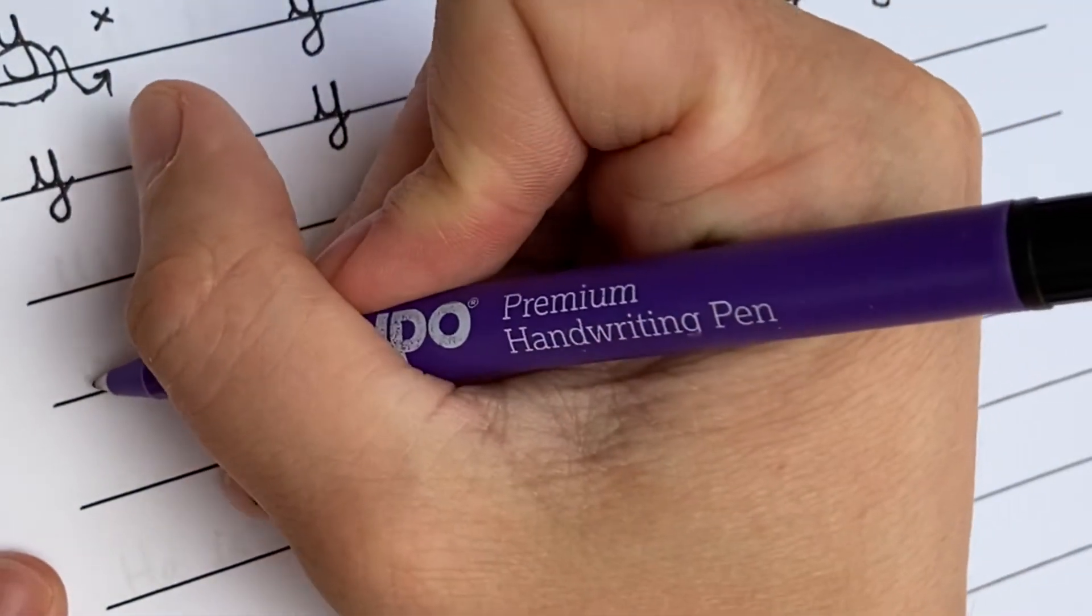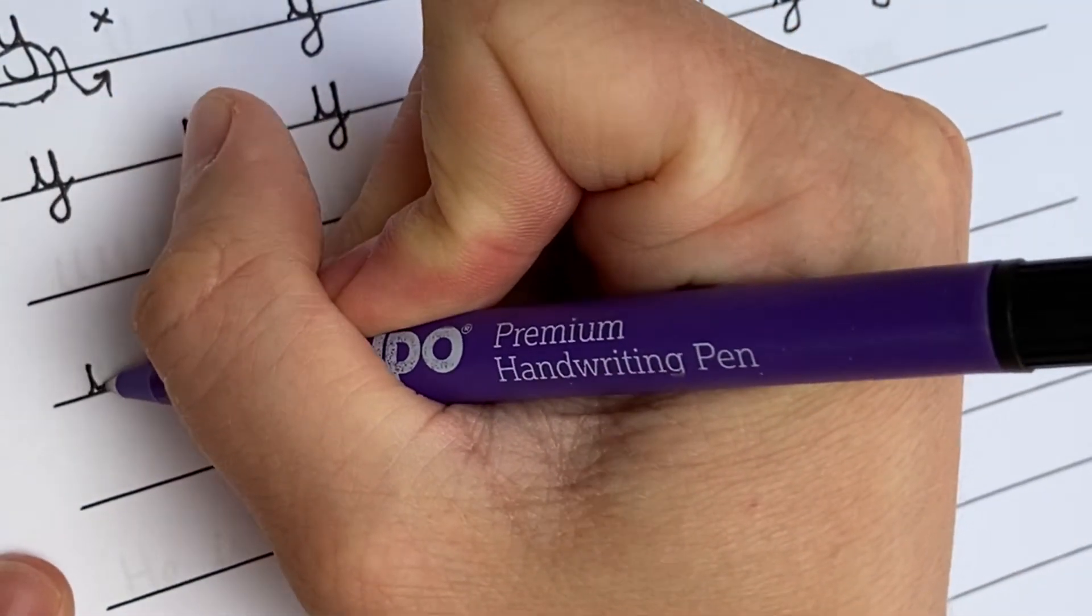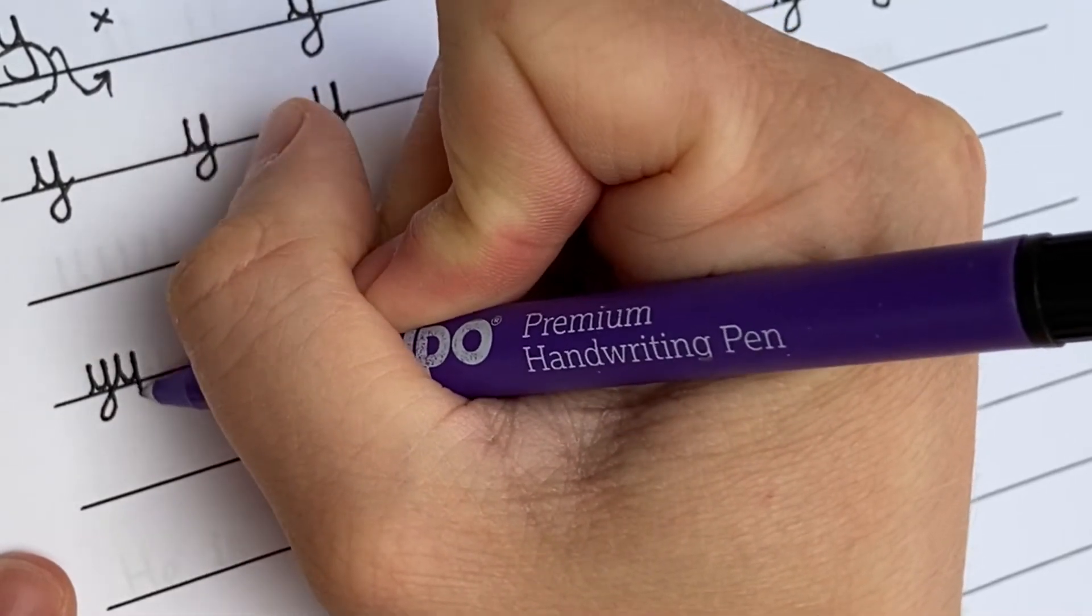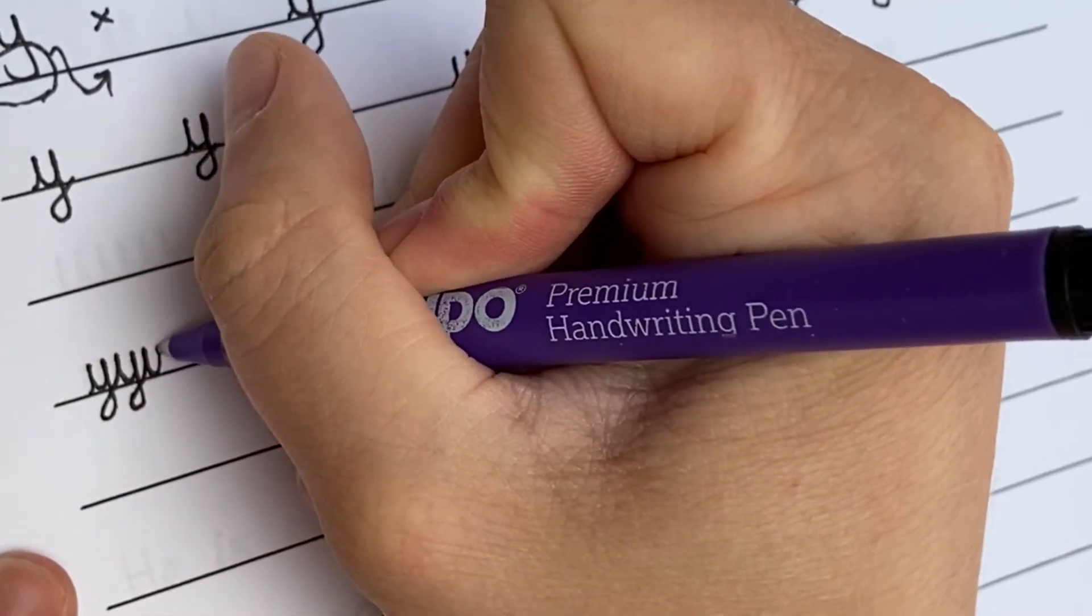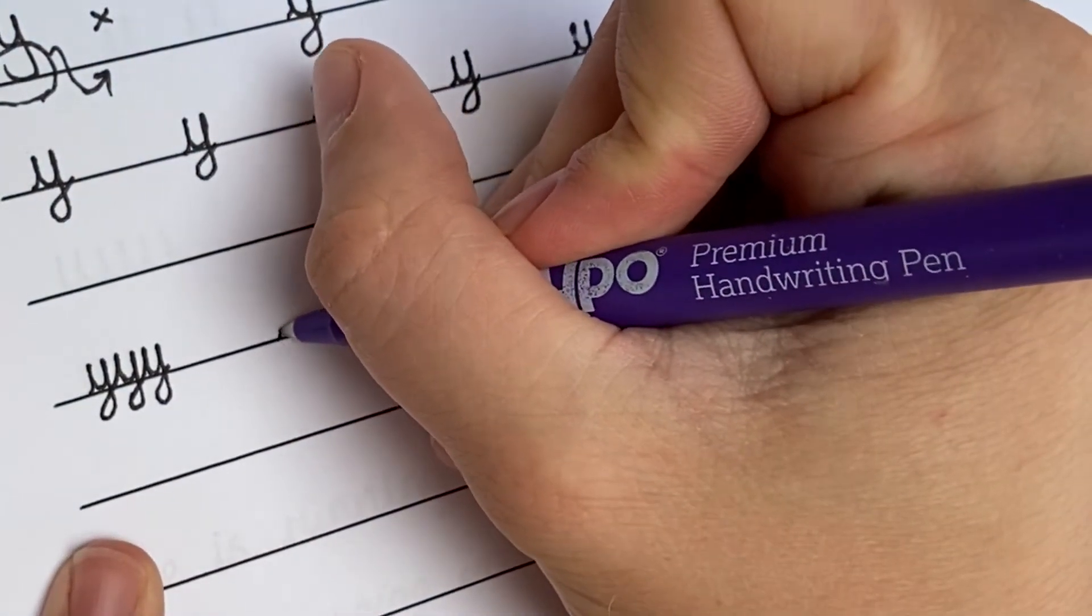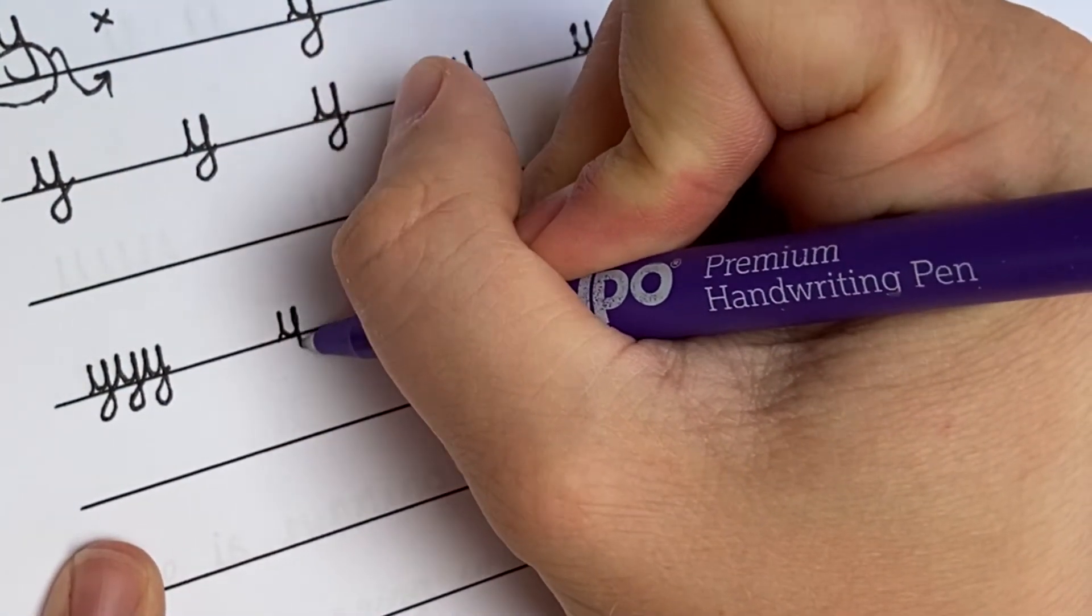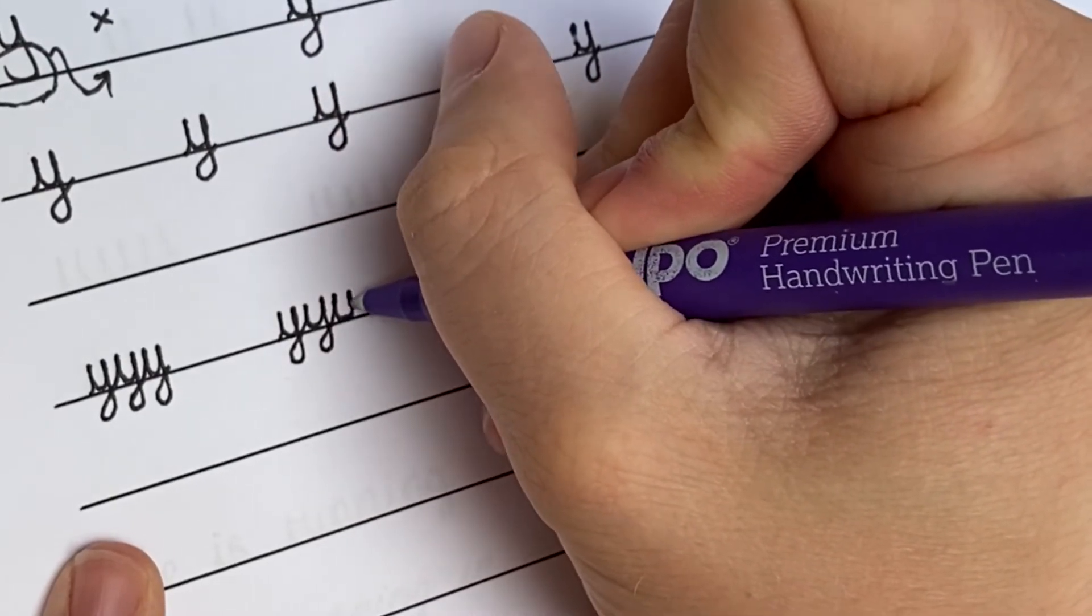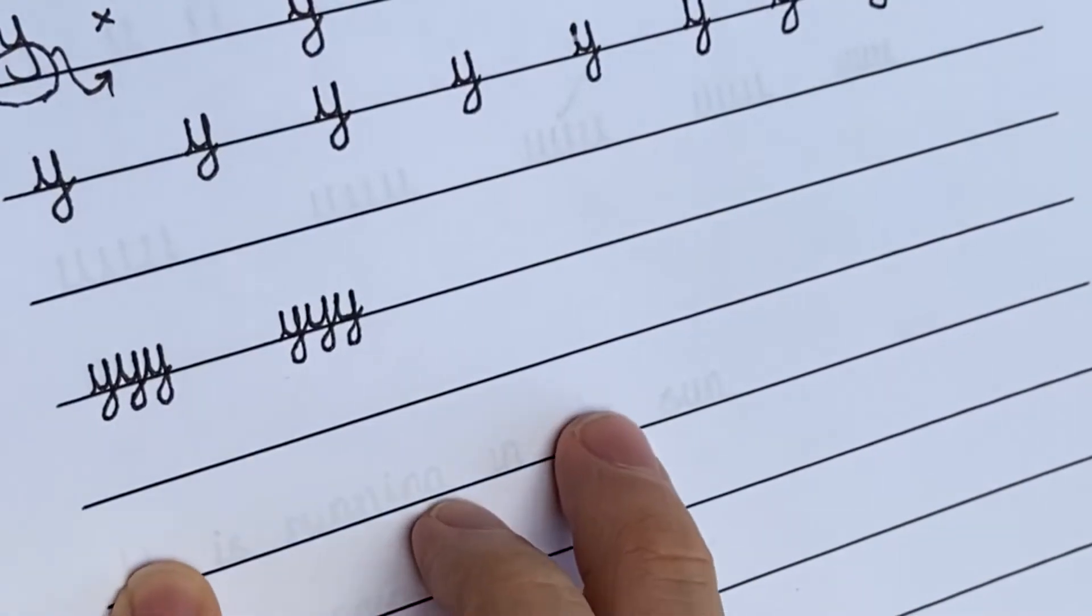Let's practice joining our letter Ys then. We're going to do three letter Ys joined together. Let's do six sets of three. So we start on the line. We go up, down and round, up, down, loop, hook, up, down and round, up, down, loop, hook, up, down and round, up, down, loop and hook.